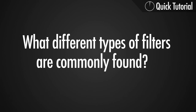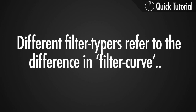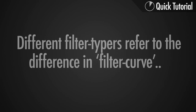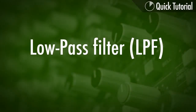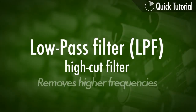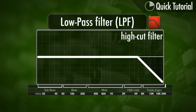What types of filters do we have? There are different types of filters performing different types of filter curves. The first is called a low pass filter, and this allows the low frequencies to pass through. It can also be called a high cut filter because it removes the high frequencies.